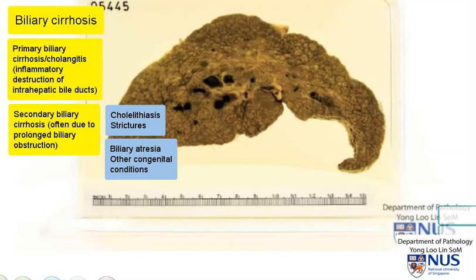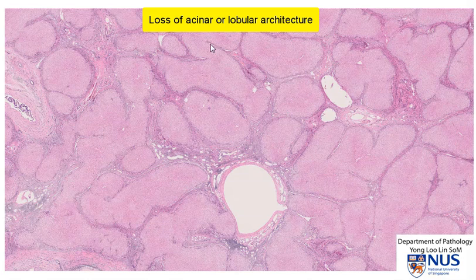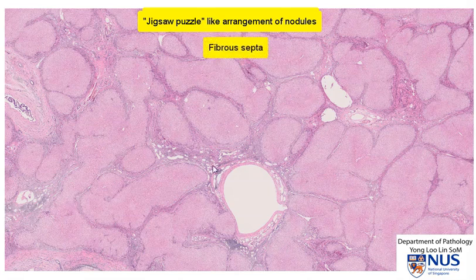To ascertain the cause, it would be important to look at the history, the age of the patient, and the presence of clues — for example, if there are large dilated bile ducts with stone formation. On histology, there would be replacement of the acinar or lobular architecture of the liver by these regenerative nodules, and there may be a jigsaw puzzle low-power appearance of these nodules, and in between there will be fibrous septa with proliferation of ductules.